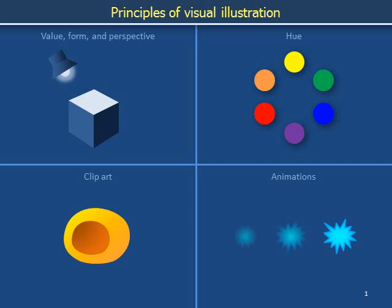Basic principles from representational art are important for effective visual illustration of scientific concepts. These principles include the use of light and shadow to convey the spatial relationship between a viewer and an object, as well as the use of color. This slide deck includes static clipart and examples of animations that you can study and use by opening the presentation in PowerPoint.